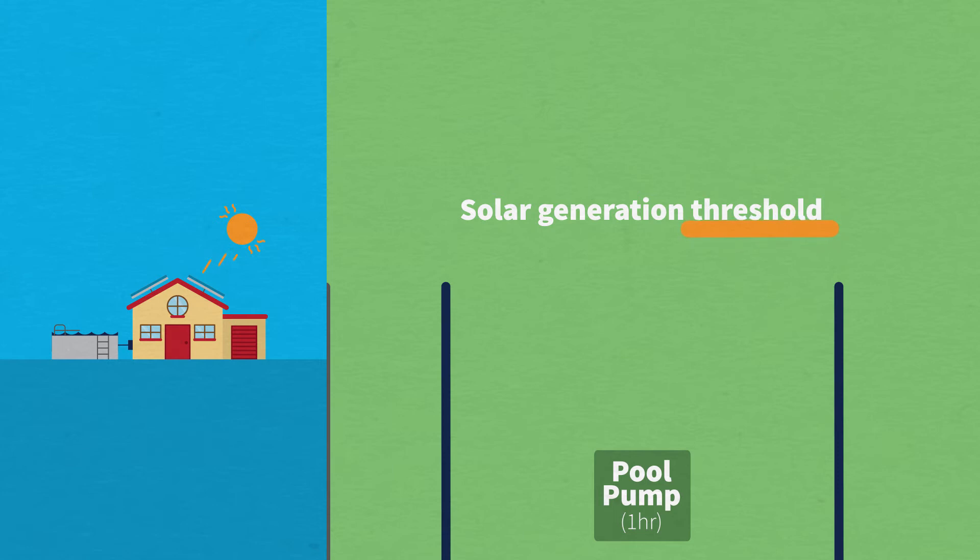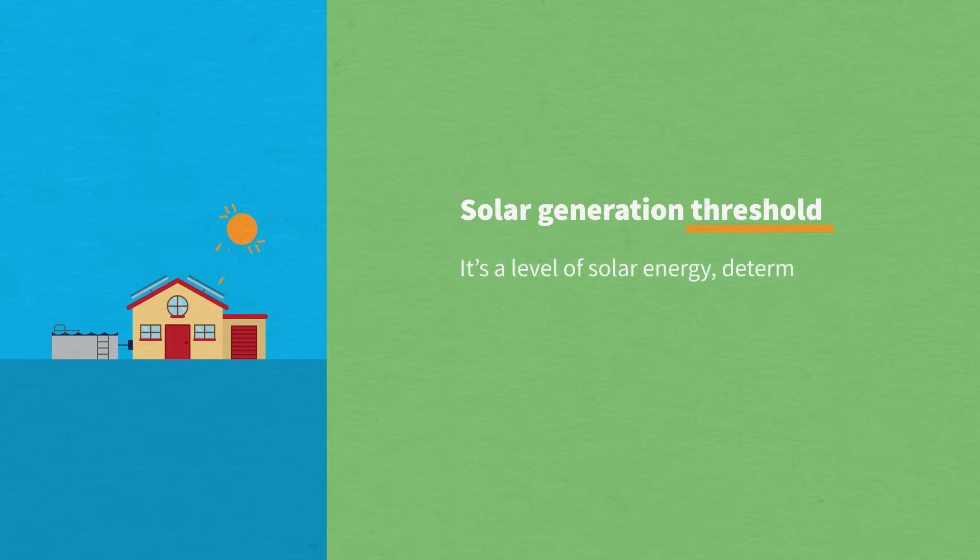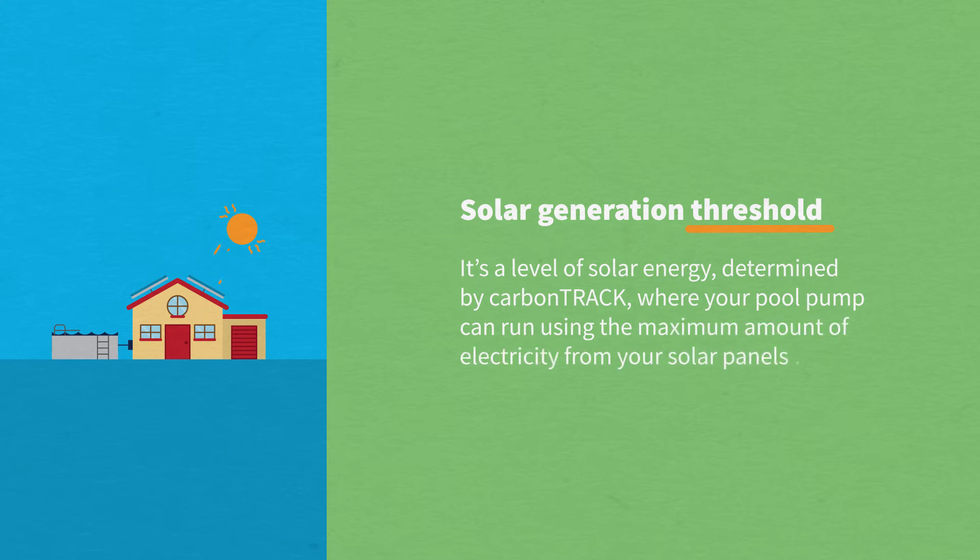So, what is the threshold? It's a level of solar energy determined by CarbonTrack, where your pool pump can run using the maximum amount of electricity from your solar panels.